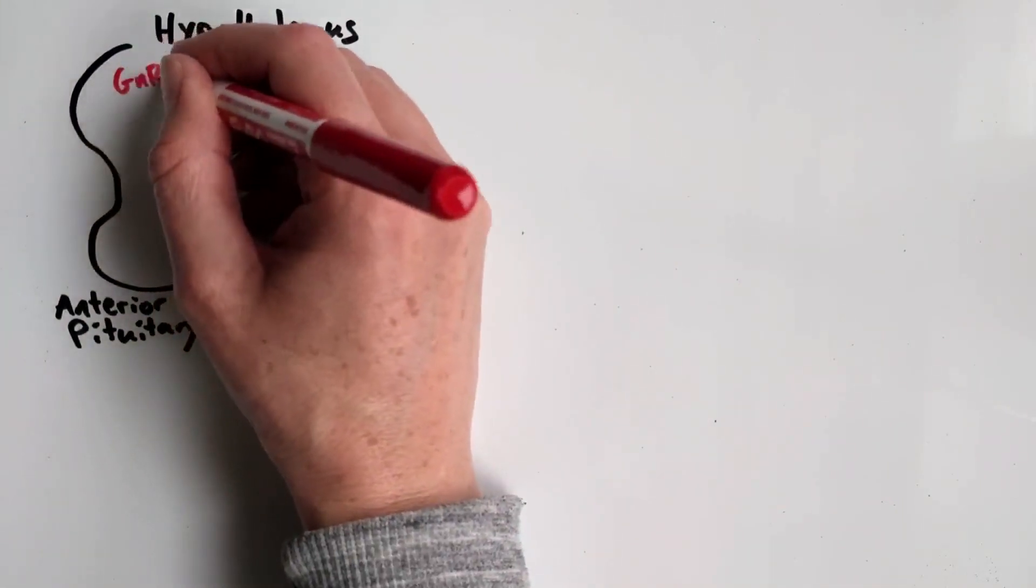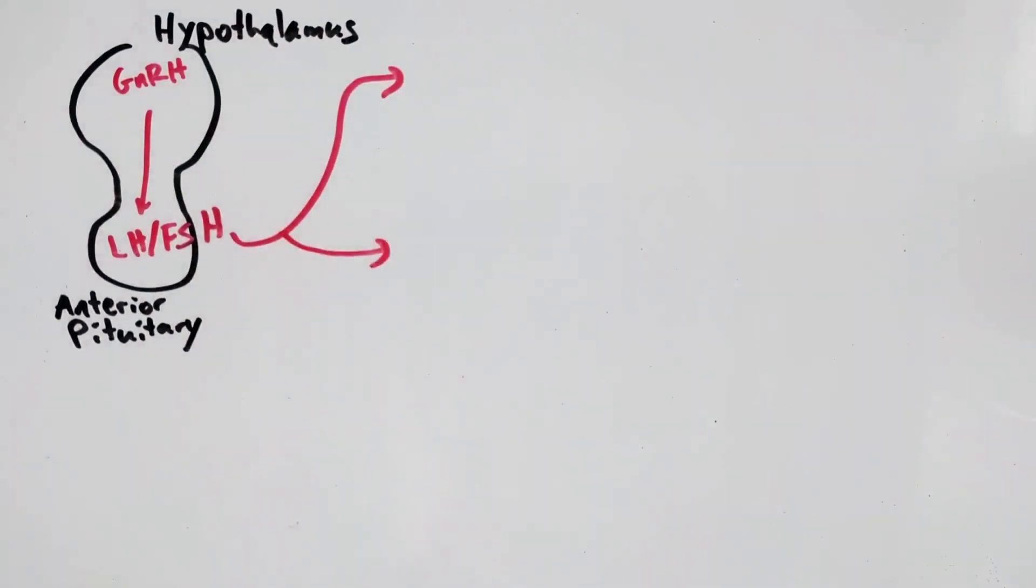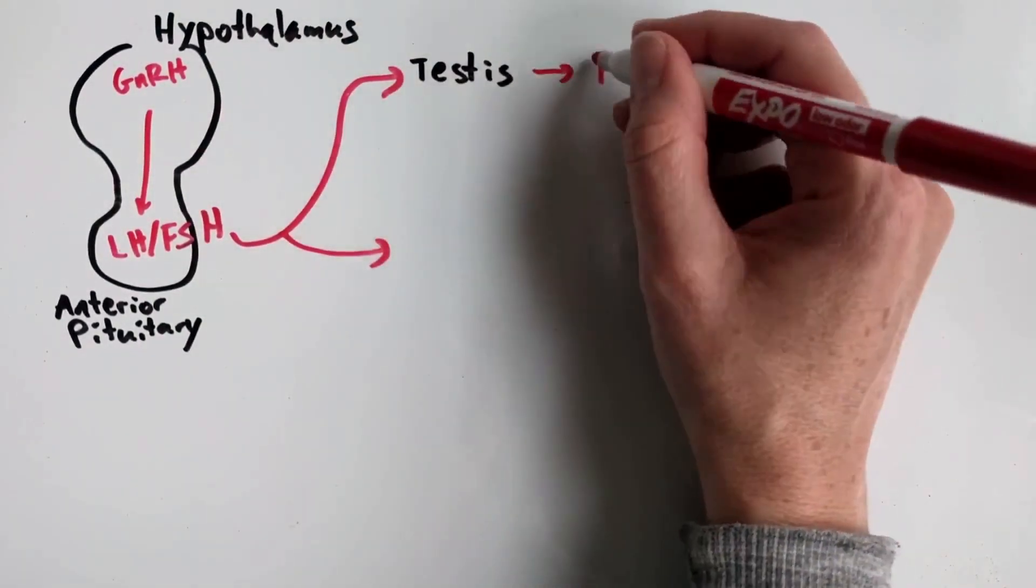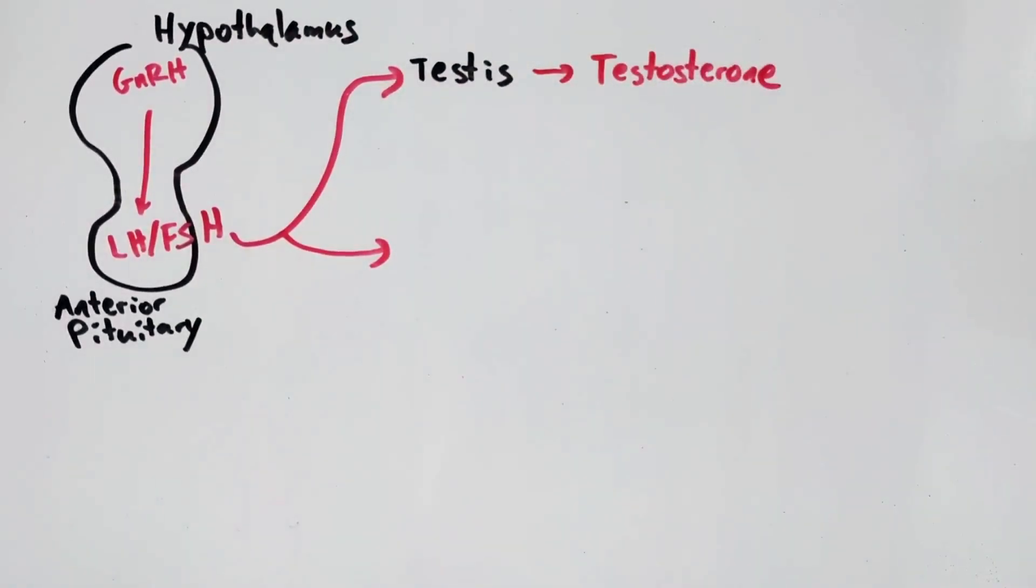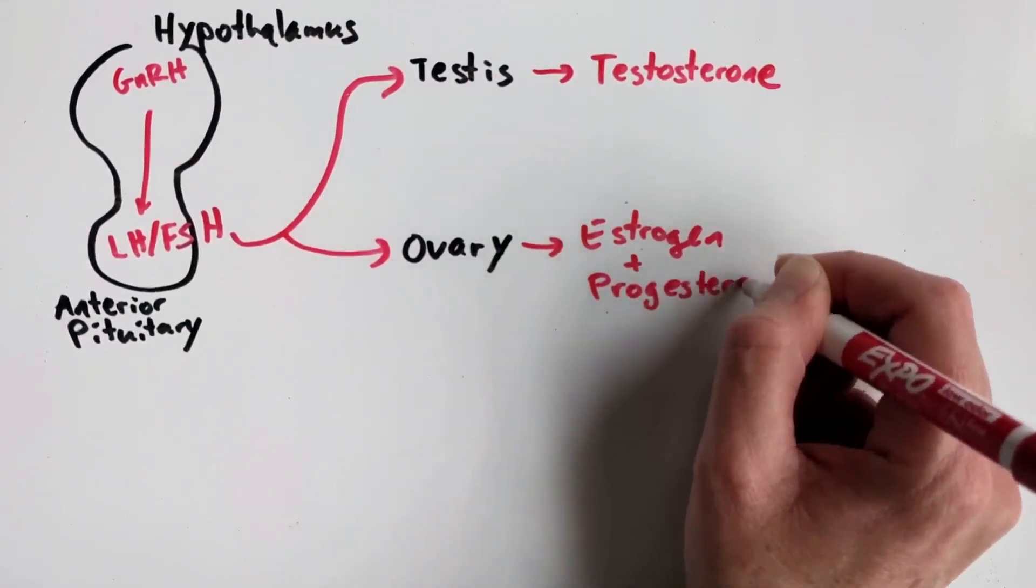Hormones control the production of sperm and eggs. GnRH is a hormone released by the hypothalamus that controls the release of LH and FSH from the anterior pituitary. LH and FSH regulate the release of the sex hormones, testosterone, estrogen, and progesterone, from the gonads.